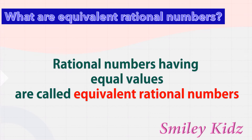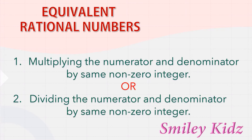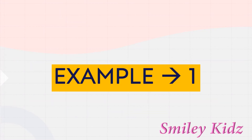Equivalent Rational Numbers: Rational numbers having equal values are called equivalent rational numbers. Equivalent rational numbers of a given rational number can be obtained by either multiplying the numerator and denominator by the same non-zero integer, or dividing the numerator and denominator by the same non-zero integer. Let us understand equivalent rational numbers through a few examples.